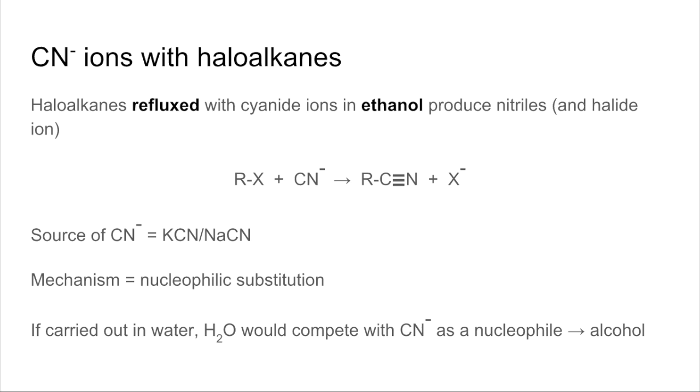So one way to extend the carbon chain is to react haloalkanes with cyanide ions, CN-. You would reflux your haloalkane with the cyanide ions in ethanol, and that's going to give you a compound called a nitrile, and you'd also get a halide ion produced. So the general reaction: RX represents the haloalkane, CN- is the cyanide ion, and there's the nitrile with this functional group C triple bond N, and there's the halide ion coming off the haloalkane.